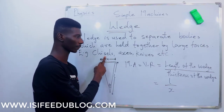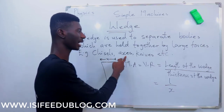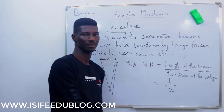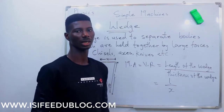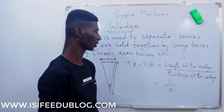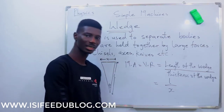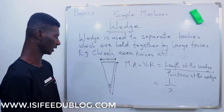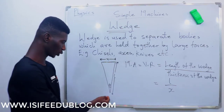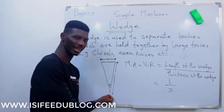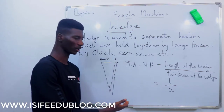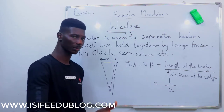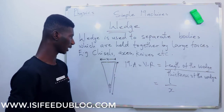Examples include chisels, axes, knives, and so on. Now this is a schematic diagram of what a wedge is. It must have a pointed end which is very sharp, used to do the separating.